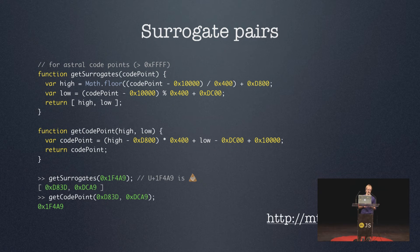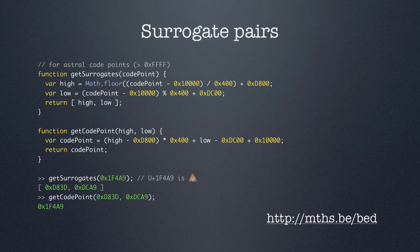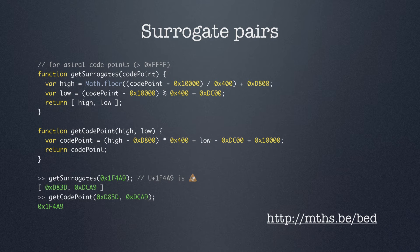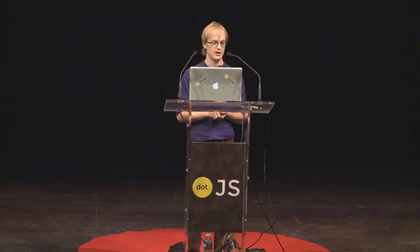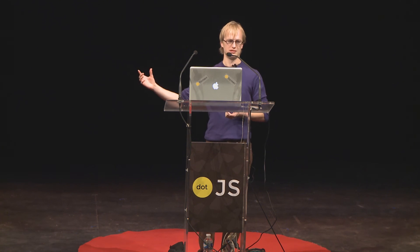There are formulas to calculate the surrogates based on a given astral code point, and it's also possible to do the reverse — to calculate the original astral code point when given just the two surrogate halves. This is a JavaScript implementation of those formulas — you don't need to remember all this. All you need to remember is that whenever you want to work with astral Unicode symbols in JavaScript, there is some extra work involved. The whole concept of having a single escape for BMP characters and two separate escapes for astral characters is a bit confusing, and it has lots of annoying consequences throughout the entire JavaScript language.